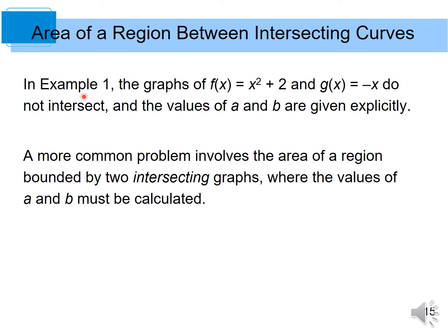In the first example, the graphs of f(x) and g(x) do not intersect, and the values of a and b are given explicitly. For the second objective, a more common problem involves the area of a region bounded by two intersecting graphs, where the values of a and b must be calculated.